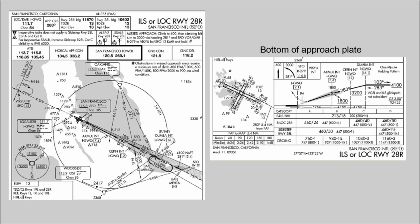So how do you position yourself for an ILS approach? Let's go back to the approach plate. There's a point in the sky called a waypoint that you fly to. For San Francisco we have a fix called DUMBA — it is the IAF, the Initial Approach Fix. This is where you fly to pick up the ILS, and you need to be within this area.